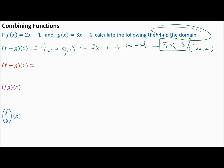Let's try subtraction. F minus G of X — by definition that is F of X minus G of X. Simple enough. Which means we take F of X, which is 2x minus 1, minus G of X.